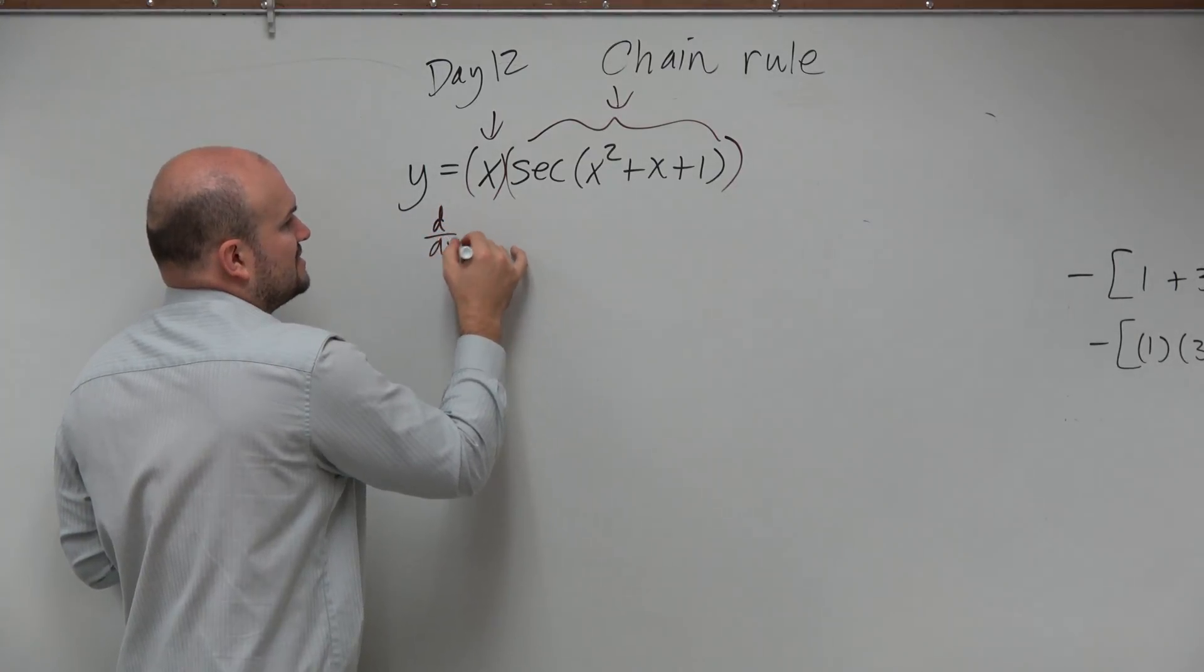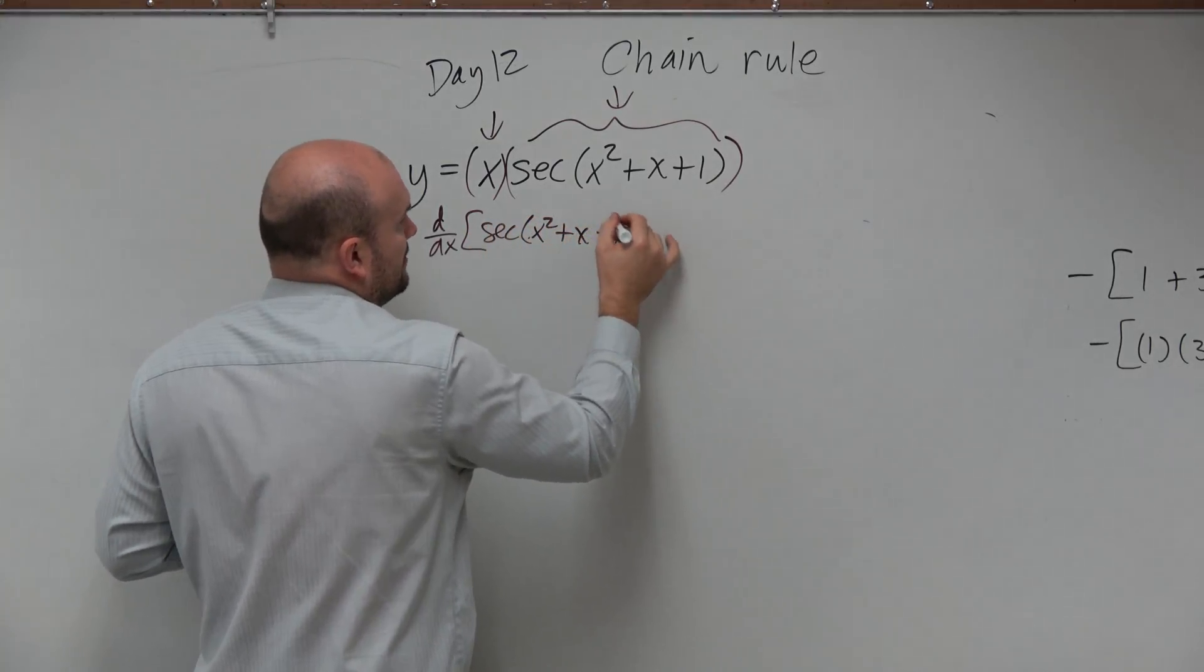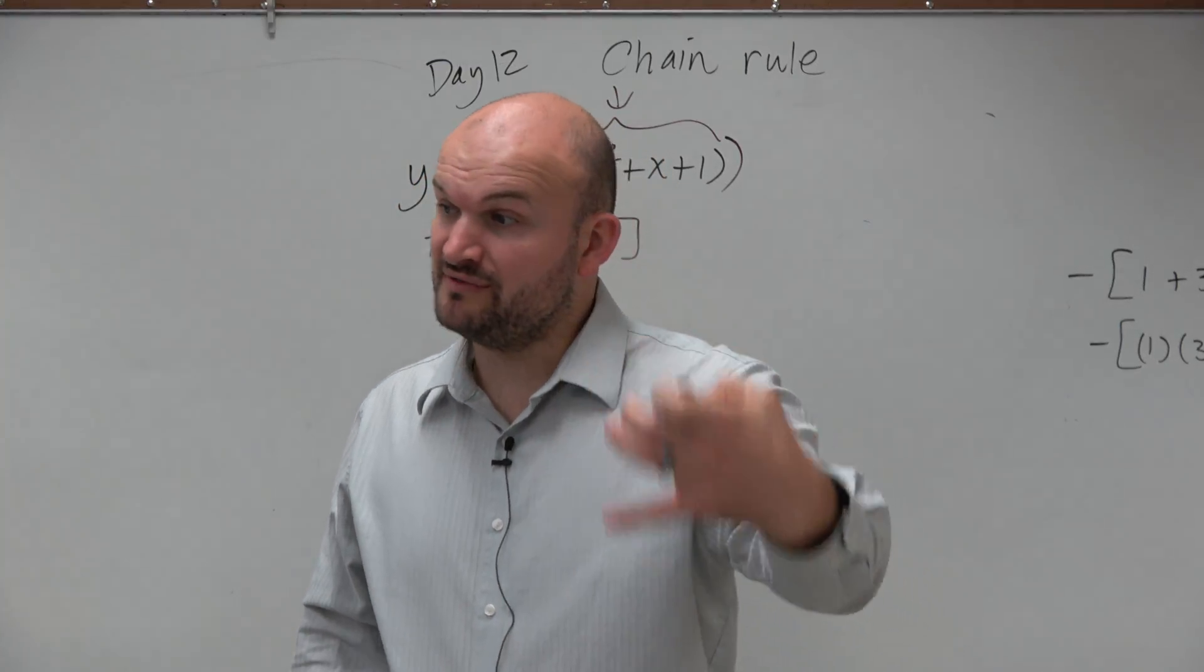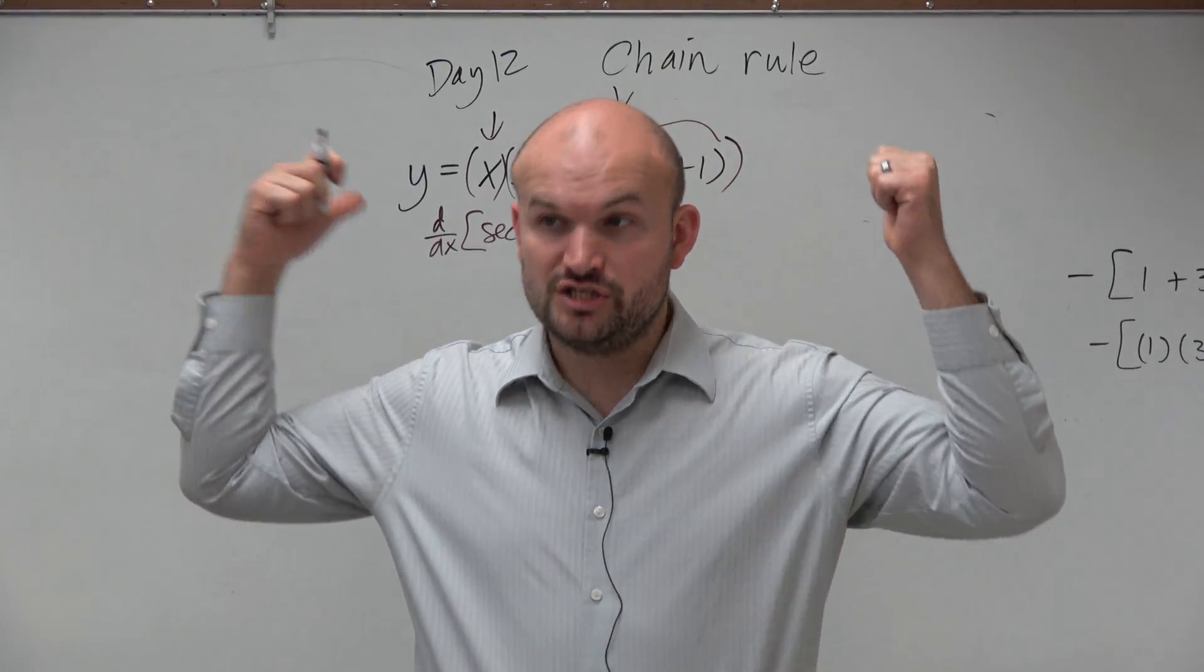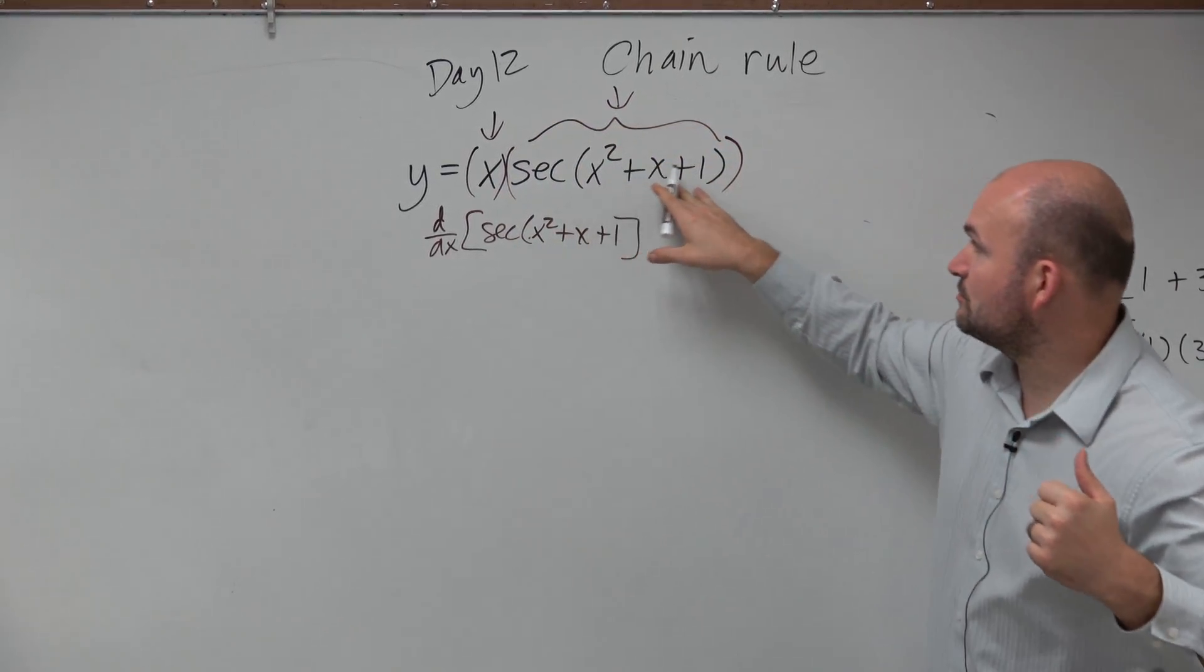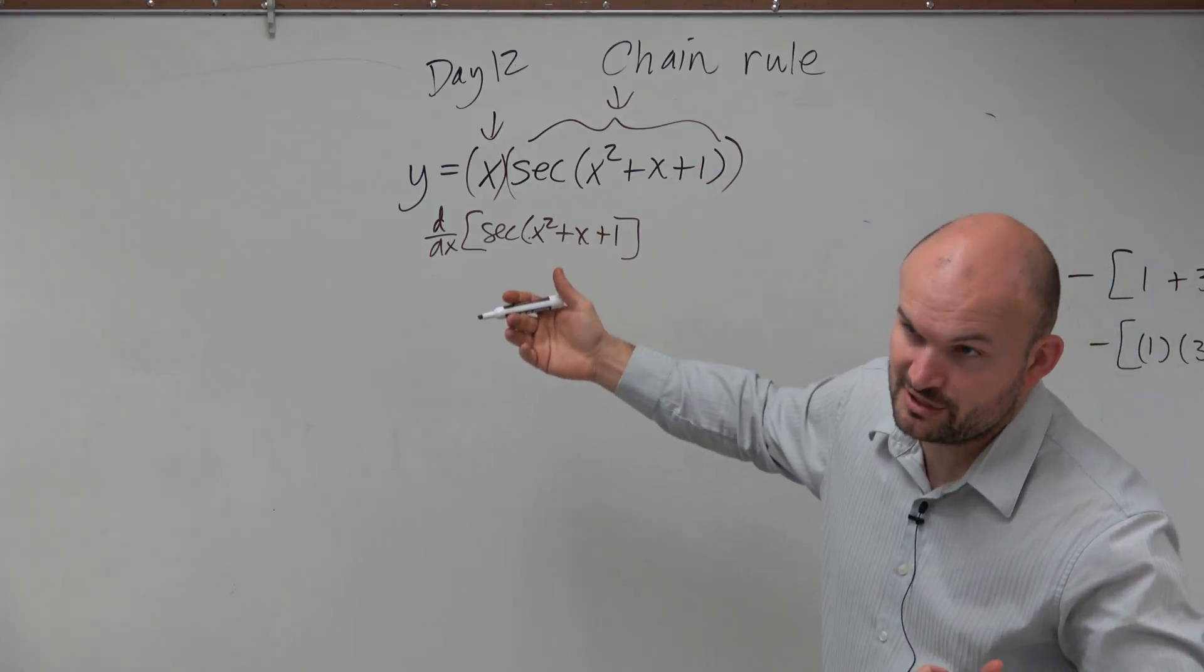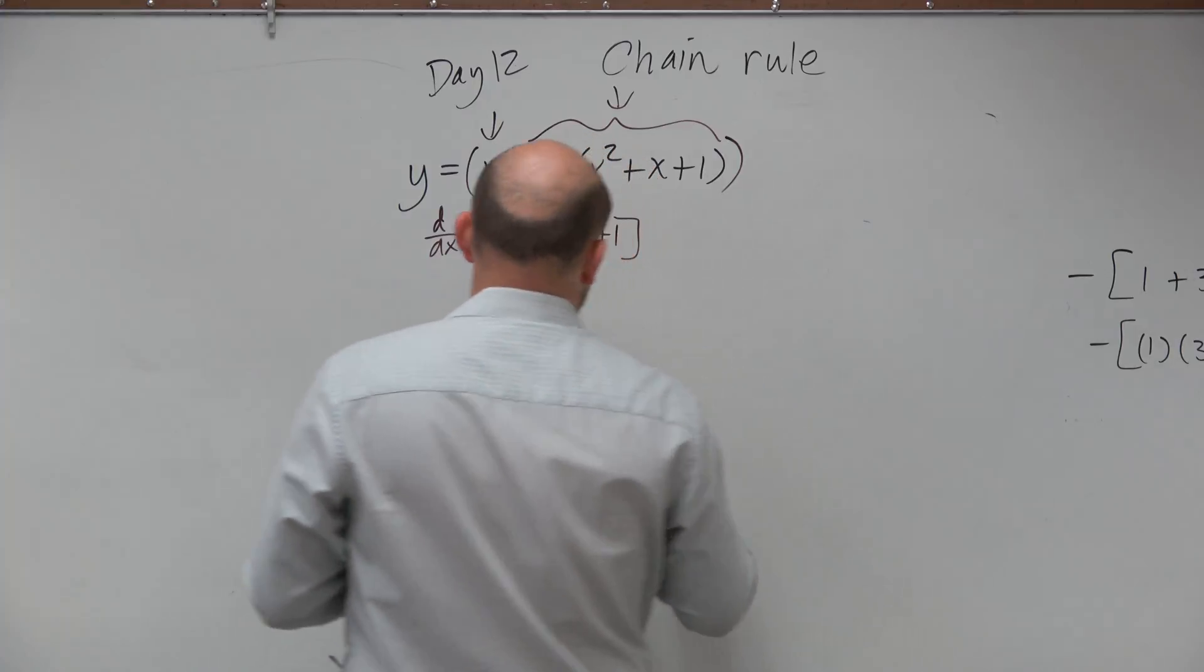d/dx of secant of x² + x + 1. We know that's going to be the chain rule. So what we're going to have to do is take the derivative of secant, which is secant of x tangent of x, plug in the g(x) function, which is x² + x + 1, and then multiply it by the derivative of the inside, which is 2x + 1. So it's a lot, but let's go ahead and write it out.